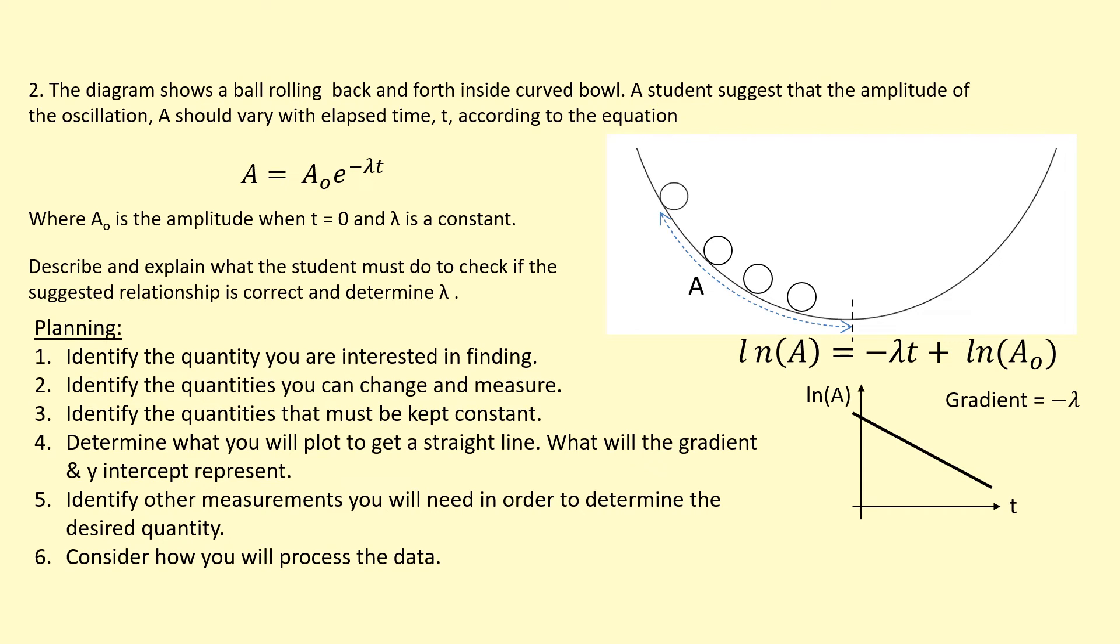Then I need to explain how I would process this data to find lambda and A0. First, the gradient is equal to minus lambda. That means I just need to do minus of the gradient to get lambda. Then the y-intercept is equal to ln A0. So what I need to actually do is e to the power of the y-intercept to get A0.